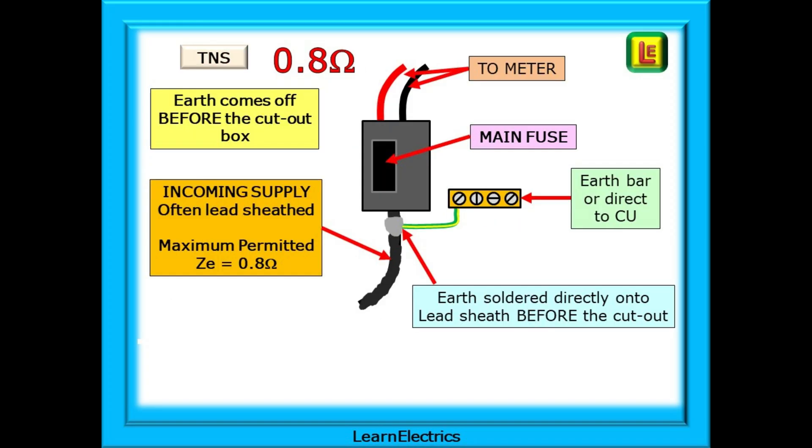Now look at this drawing of a TNS system. The big clue here is the great blob of solder just below the cutout box. It is from here, before the cutout, that we take the earth cable into the installation. Remember this layout. The earth may go to an earth terminal near to the cutout or it may go directly into the consumer unit. They are all slightly different so look for the solder blob. That is the giveaway. And ZE for a TNS system is 0.8 ohms maximum. Again, this is the ZE of the outside world and because it is older technology we have a higher maximum permitted ZE 0.8 ohms for TNS systems.